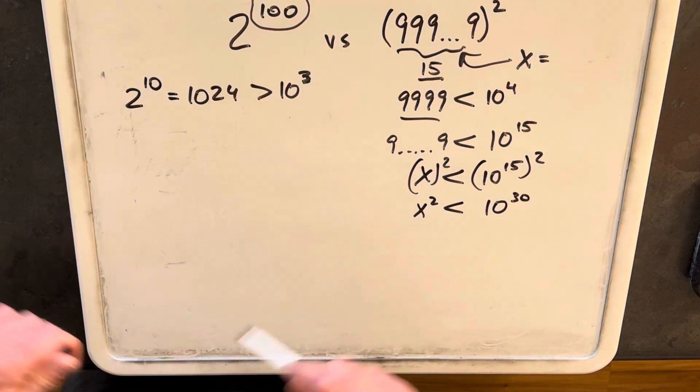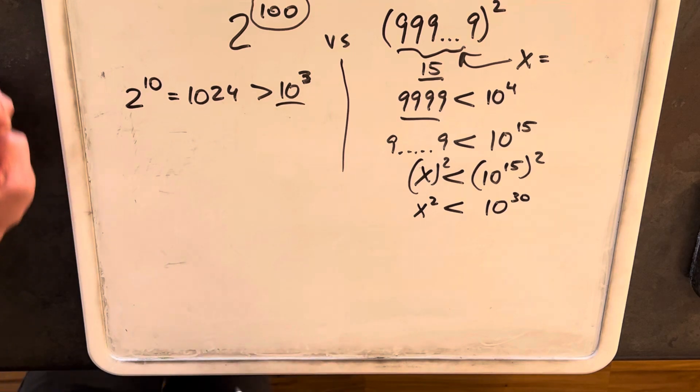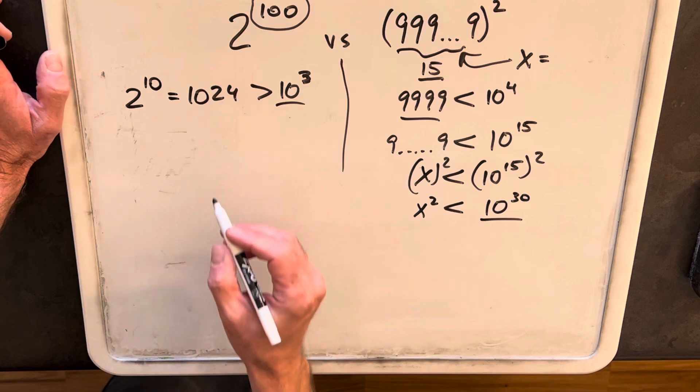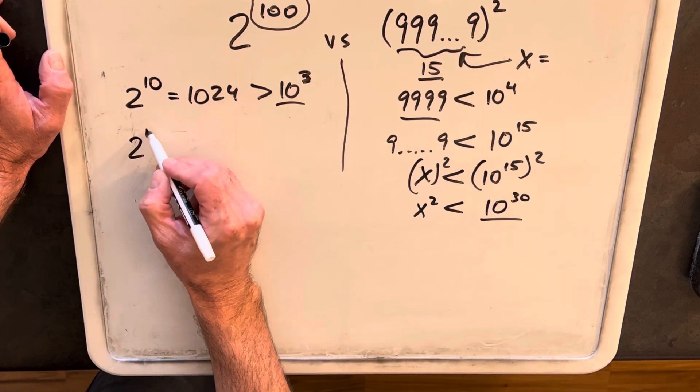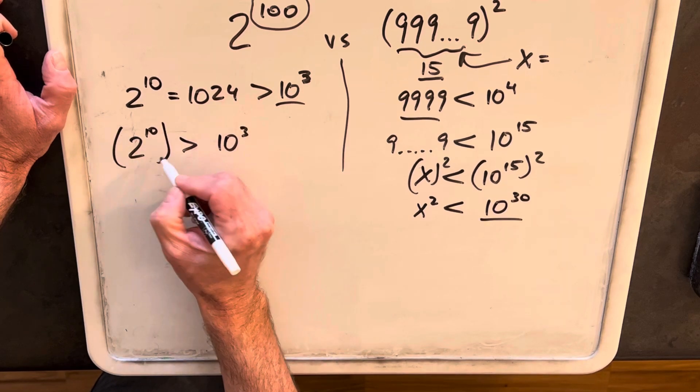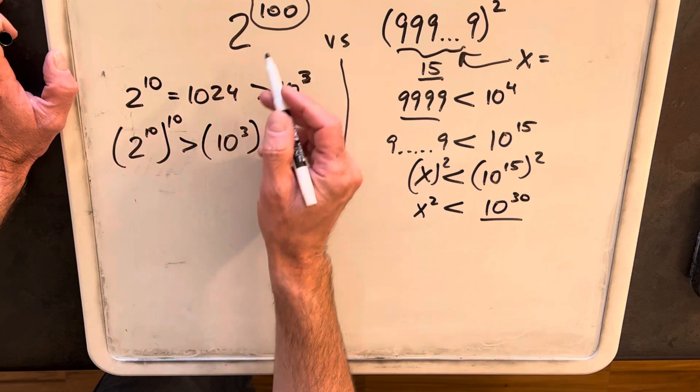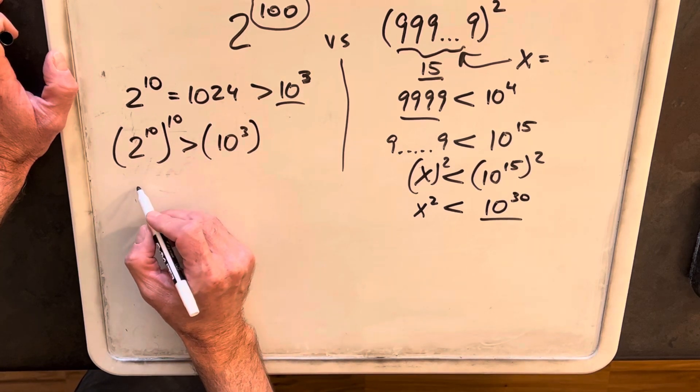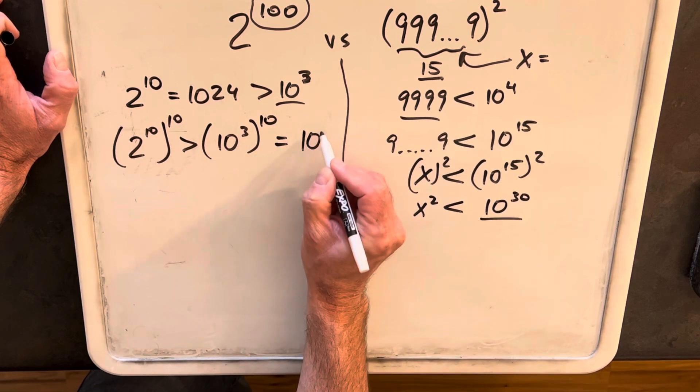So then, on our left side, dealing with our left side, the 2s, we want to turn this into a third, we want to compare to 10 to the 30th. So if I take 2 to the 10 is greater than 10 cubed, I'll take the 10th power on both sides. And so you see why I kind of wanted to get away from the 99, because I wanted to get it to 100, so I cheated. And then so this is to the 10th, and so this equals 10 to the 30th.